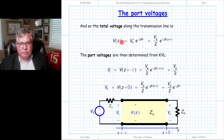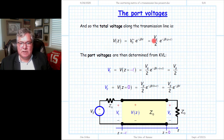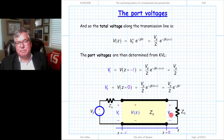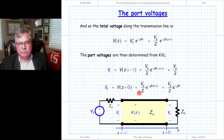From the first boundary condition there was no reflected wave, so total voltage is simply the plus-wave voltage. We found V0+ in terms of Vg from the second boundary condition and insert that in to get a description of total voltage at every point on the transmission line in terms of Vg. We then find port voltages by evaluating total voltage at each location: V1 is evaluated at Z equals minus L, giving a nice simple Vg over 2. V2 is evaluated at Z equals zero, giving the corresponding result for the total voltage at port 2.